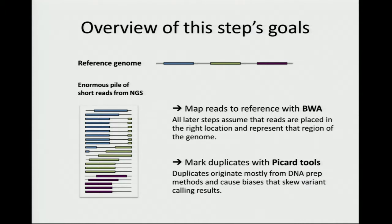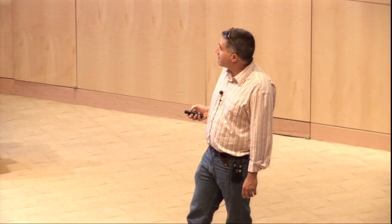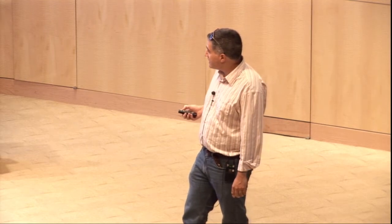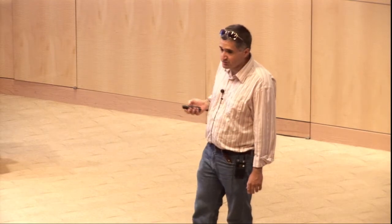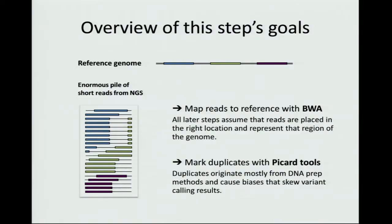Here at the Broad, we typically use BWA for mapping, although there are other algorithms out there. BWA takes this raw pile of reads and figures out where from the genome they came from. The second step is something called marking duplicates, which I'll describe later. Let's first look at what happens with BWA and how we map reads to the reference.